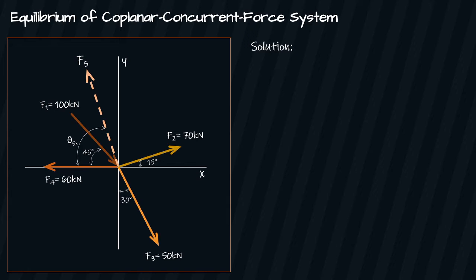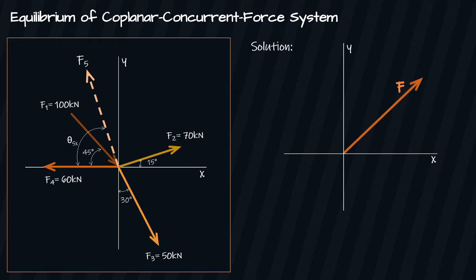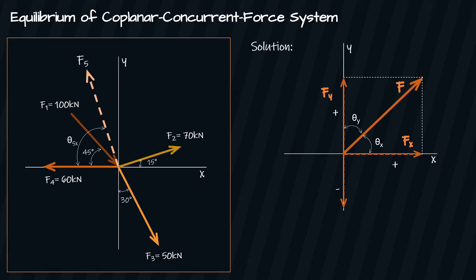To solve this problem, we first resolve the inclined force components. Say force F is an inclined force with angle theta-x from the horizontal and angle theta-y from the vertical axis. The components can be resolved as Fx and Fy for horizontal and vertical components respectively. For sign convention: vertical forces upward and horizontal forces going to the right carry positive signs; vertical forces downward and forces going to the left carry negative signs. We use the standard trigonometric formulas to solve for Fy and Fx given the angles.